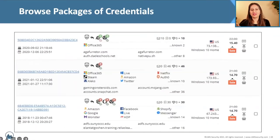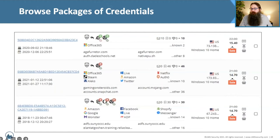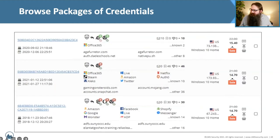You can browse different packages of credentials on these dark web stores. For $14.70 on sale, you can get access to Office 365, Microsoft Live, Netflix, Steam, Amazon, Twitter, Auth0, and more. It is a one-stop shop for compromising tons of accounts. They also offer perks and discounts if you order more than $20 worth.